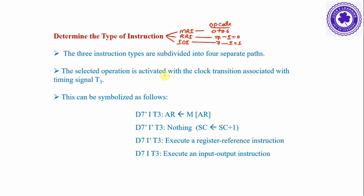The selected operation is activated with a clock transition associated with timing signal T3. This can be symbolized using D7. D7' (D7 complement) means D7 is 0. If D7' is 1 and the mode bit I is 1 at timing signal T3, it is understood that the instruction has an indirect address. If D7 is 0, it is a memory reference instruction and the effective address must be read.